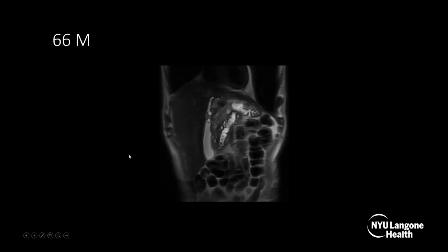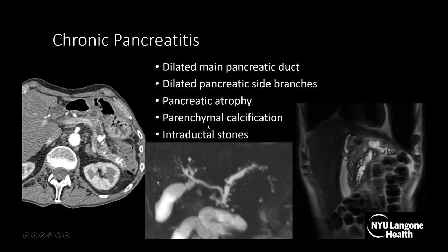Now we'll move on to chronic pancreatitis. This is a 66-year-old male on a coronal HASTE — essentially T2-weighted. You can see the main pancreatic duct is dilated with T2-dark filling defects, which are intraductal stones, and dilated side branches — findings of chronic pancreatitis. On axial CT with IV and neutral oral contrast in another patient, you can see parenchymal atrophy, intraductal stones, and pancreatic parenchymal calcifications as well.